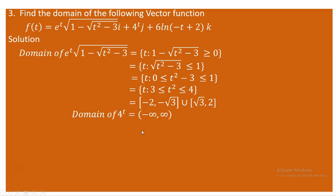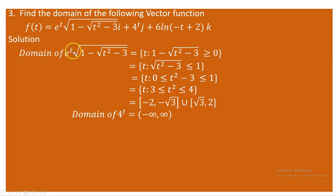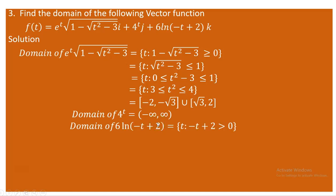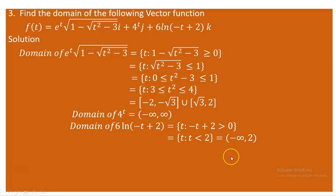The second component has domain all real numbers. For the third component, 6·ln(-t + 2), the argument -t + 2 must be greater than zero: -t + 2 > 0, giving t < 2. So the domain of the third component is (-∞, 2).